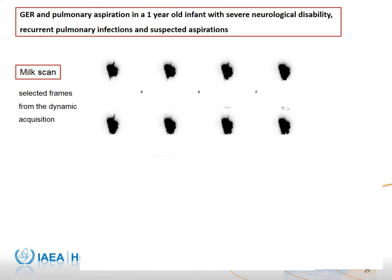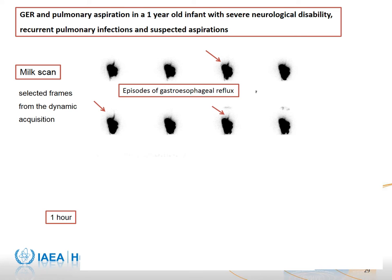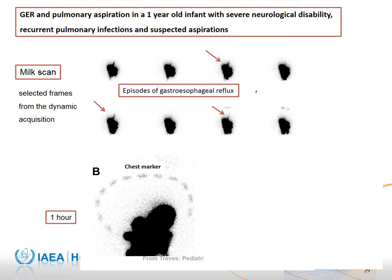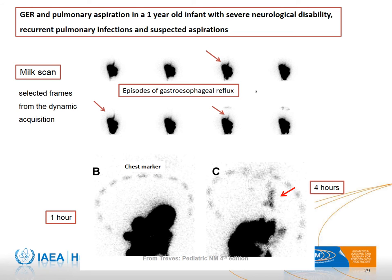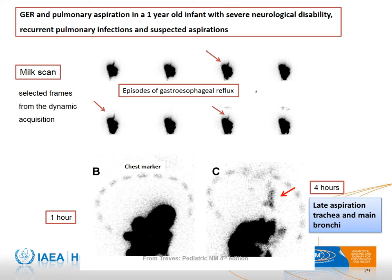This milk scan was performed on a one-year-old child with severe neurological impairment and recurrent lung infections in whom aspiration was suspected. The arrows show episodes of reflux on selected frames. The one-hour static image of the chest shows clear lung fields; however, the late four-hour image shows tracer activity in the trachea and the proximal left and right main bronchi, indicating pulmonary aspiration. This example emphasizes the importance of obtaining a late image, as it increases the sensitivity of the study in capturing an episode of pulmonary aspiration.